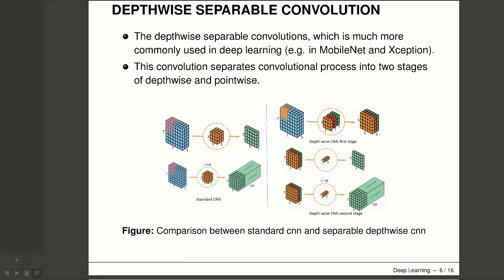This figure compares the number of multiplications in a standard CNN versus a depth-wise CNN. Having a color image with depth of 3 and size of 7x7, with a kernel size of 3, the output will have size 5x5. In a standard CNN, moving the kernel to different spatial locations requires 7×7×3 (the input dimensions) multiplied by 3×3×3 (the kernel dimensions), and with 128 kernels the total number of multiplications in a standard CNN is very large.